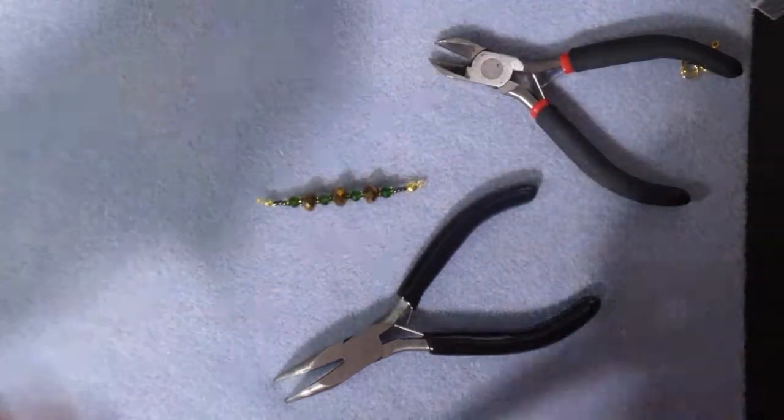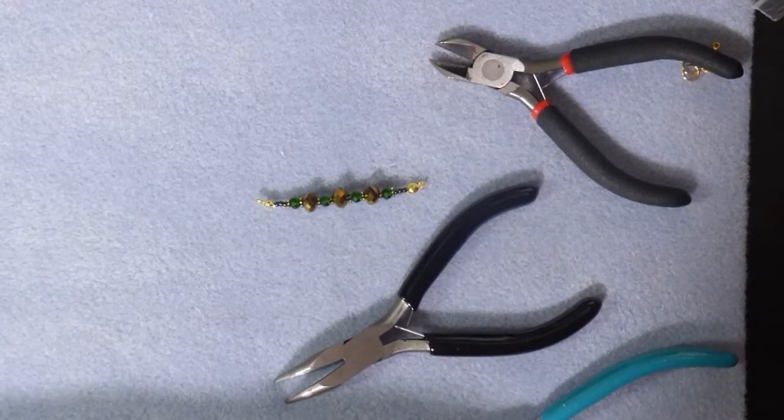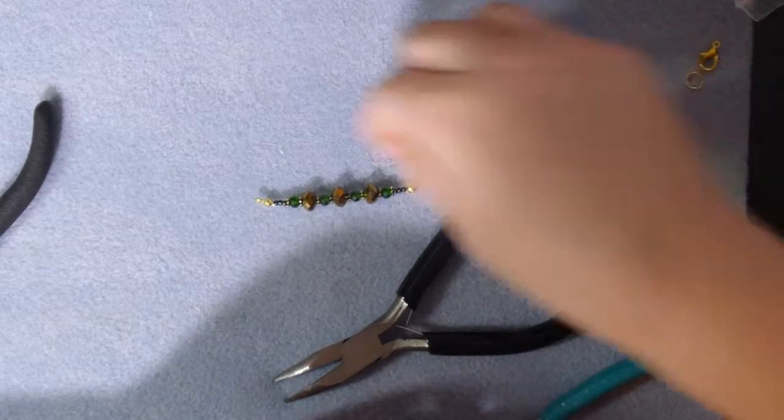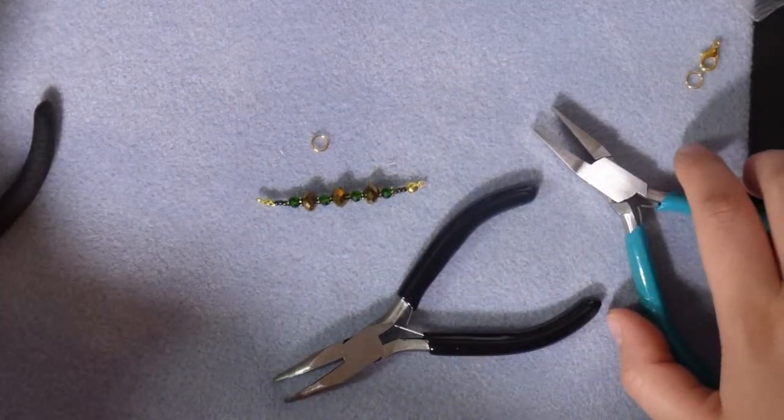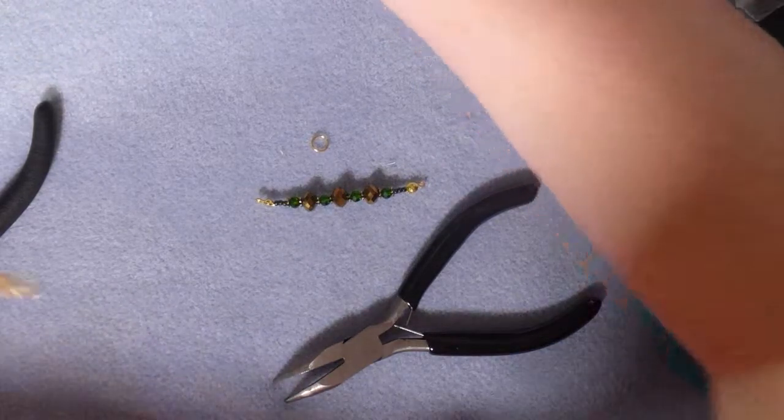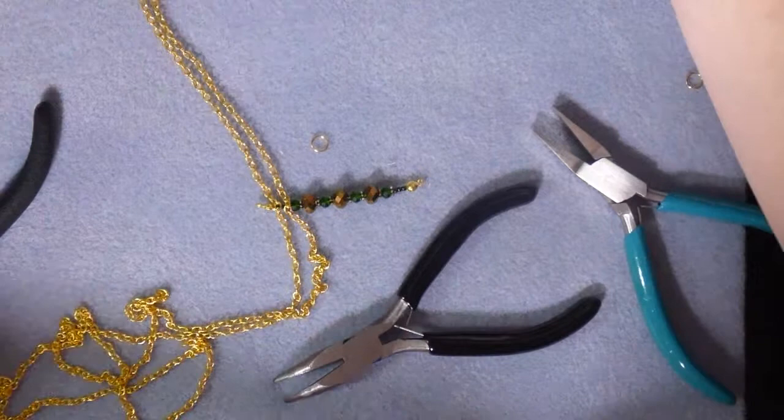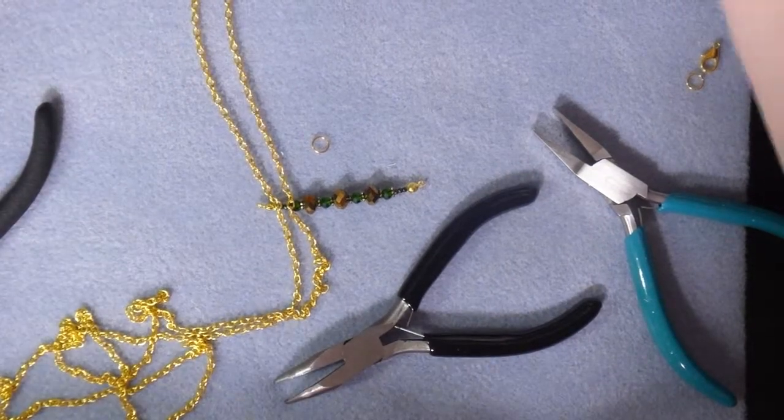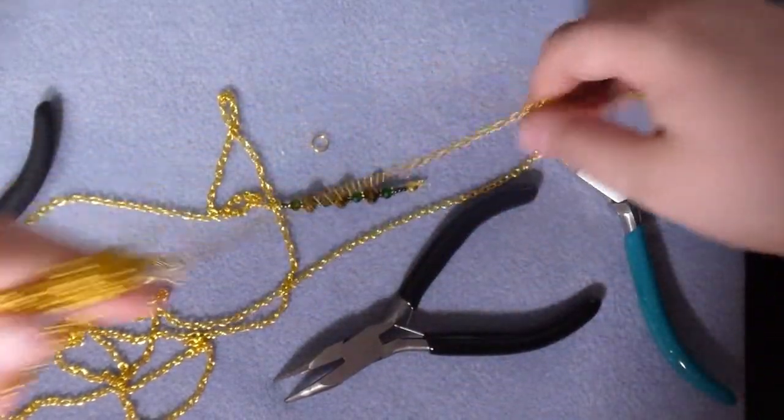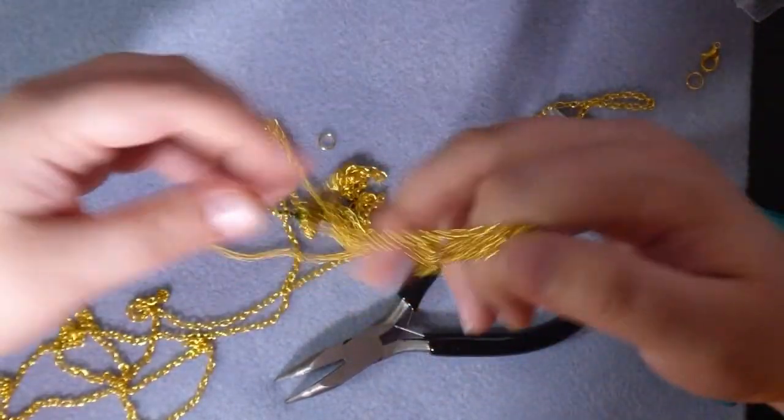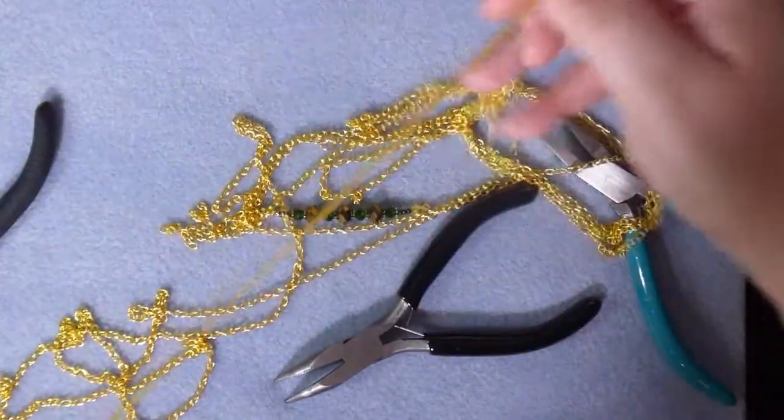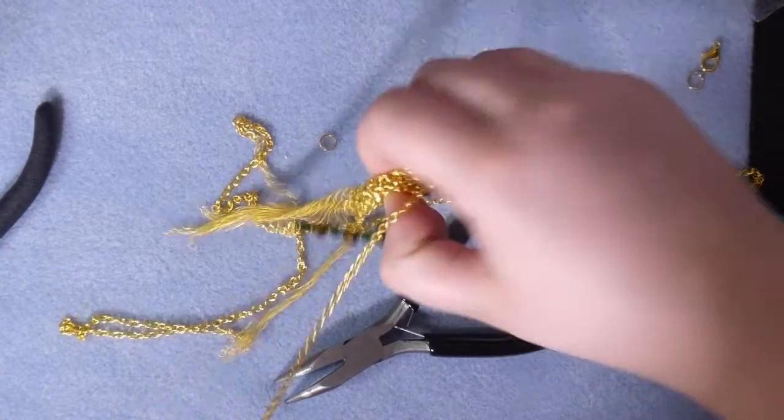So this is ready now to be joined up into something. If I take a jump ring and my chain - I can never find the end of it - we'll join it onto some chain and that will be good to build into the final necklace. There we go, this looks like the end.